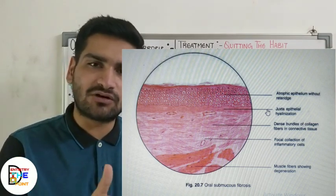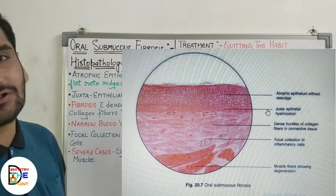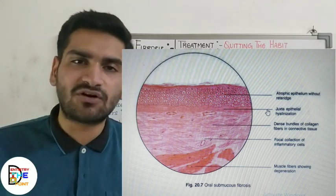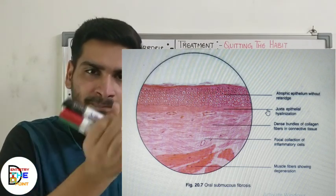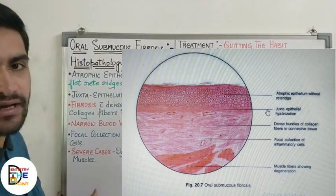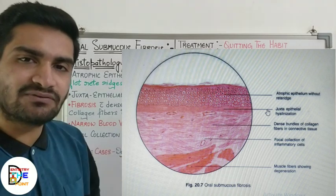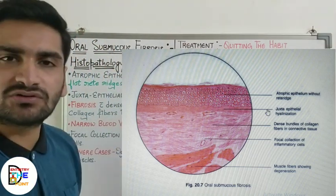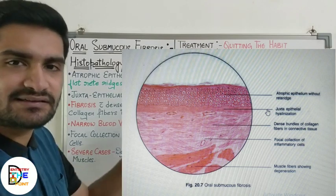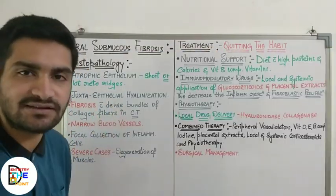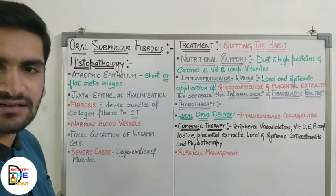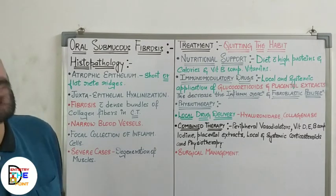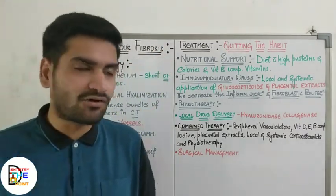Next, the blood vessels will be narrow — due to the overgrowth of collagen fibers and fibrosis, blood vessels become compressed and narrowed. There will also be focal collection of inflammatory cells in some areas of the connective tissue. In severe cases, there is degeneration of muscle fibers. To summarize the histopathological findings: atrophic epithelium, juxta-epithelial hyalinization, fibrosis, focal inflammatory cells, narrow blood vessels, and in severe cases, degeneration of muscle fibers.